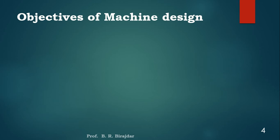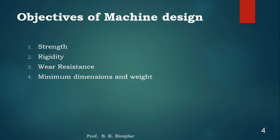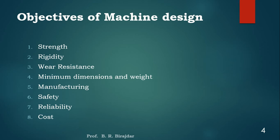Now, what are the objectives of machine design? It should have strength, rigidity, wear resistance, minimum dimensions and minimum weight, ease of manufacturing, safety, reliability, and acceptable cost. All these points we have to consider while designing any machine component. If we consider all these points, then and only then can we say this is a good design.